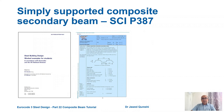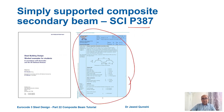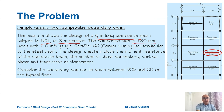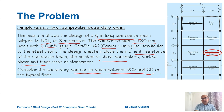This example is taken from the Steel Construction Institute guide SCI P387. This is the secondary beam we are going to design today: a six-metre long composite beam with UDL at three-metre centres. The slab is 130 mm deep with one-millimetre thick Form Floor 60 profile sheeting from Tata Steel, running perpendicular to the steel beam. Design checks include moment resistance, number of shear studs, vertical shear, and transverse reinforcement.